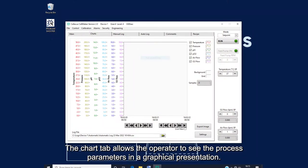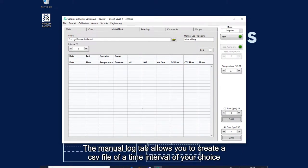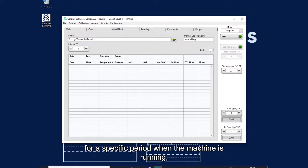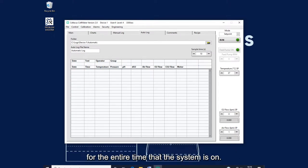The chart tab allows the operator to see the process parameters in a graphical presentation. The manual log tab allows you to create a CSV file of a time interval of your choice for a specific period when the machine is running. Otherwise, you could obtain the CSV file from the auto log that records information automatically for the entire time that the system is on.